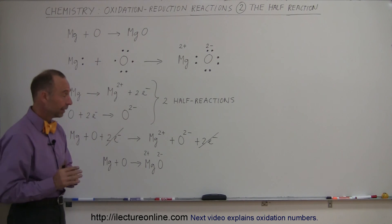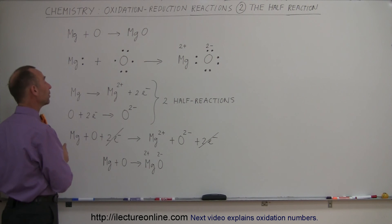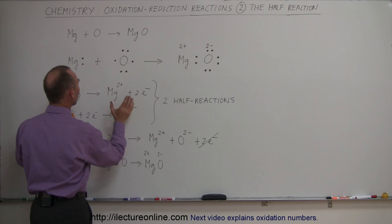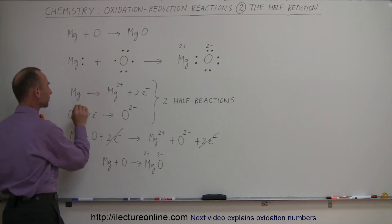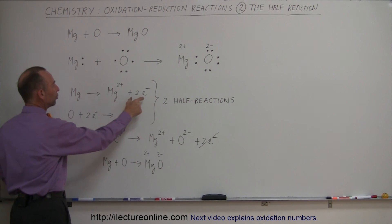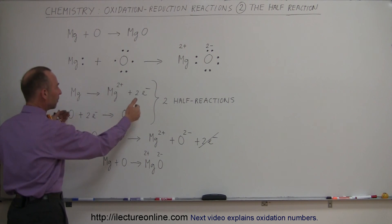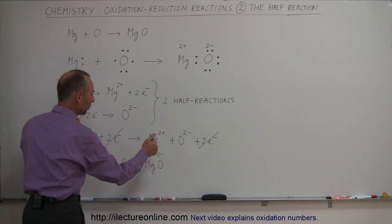But the biggest point on this video here is that we can actually show the reaction in two separate steps, where in the case of the reducer, it donates the two electrons. In the case of the oxidizer, it accepts the two electrons on both sides of the equation. We then get rid of that,